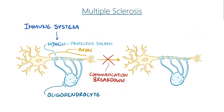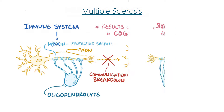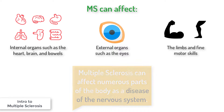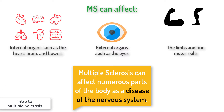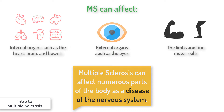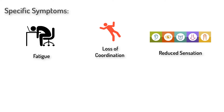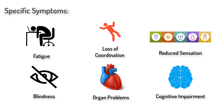The disease leads to various sensory, motor, and cognitive problems. Multiple sclerosis can affect the function of many body parts such as organs and limbs due to its root in the central nervous system. Specific symptoms include extreme fatigue, loss of coordination, issues of sensation, blindness, organ problems, and cognitive impairment.